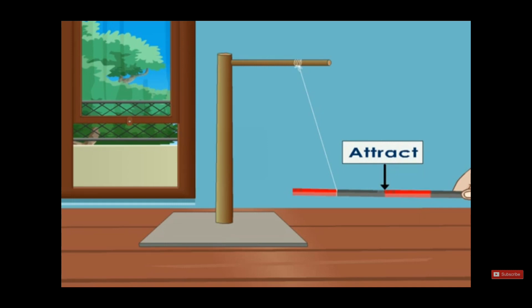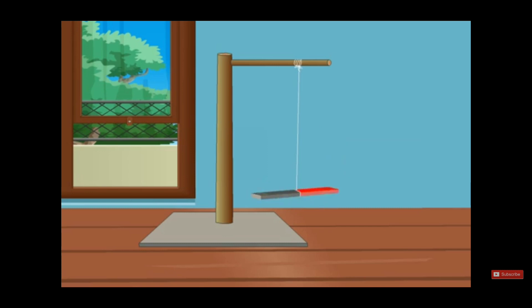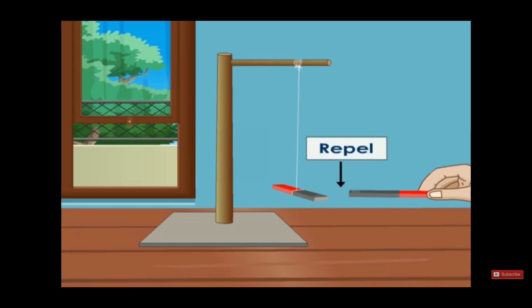But if we get the like poles — north and north — they are going to repel from each other. This is a natural property of the magnet. As you see, the two like poles repel, they do not attract.